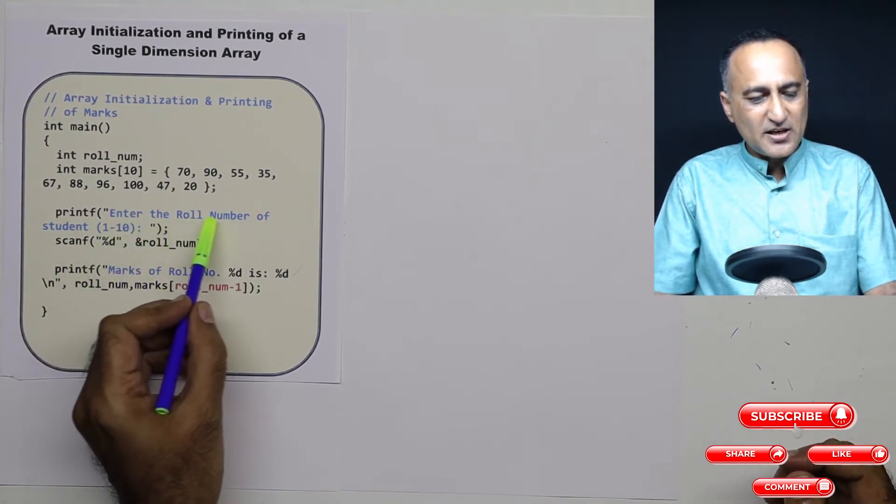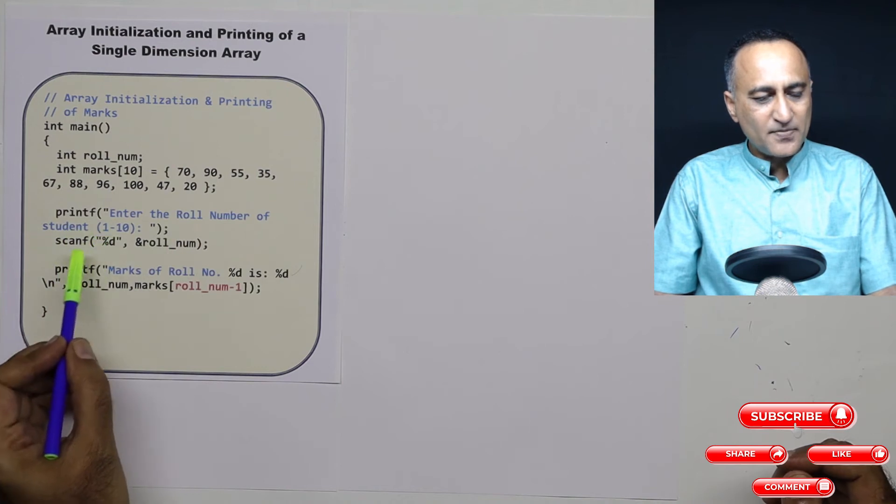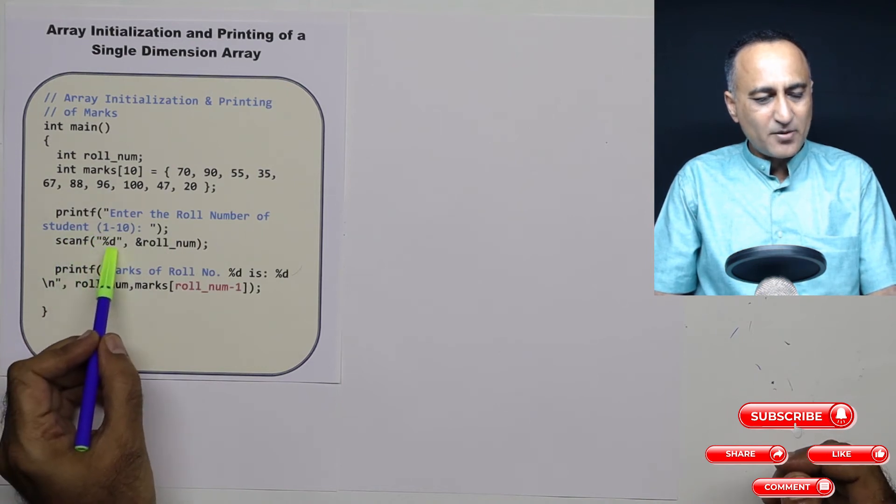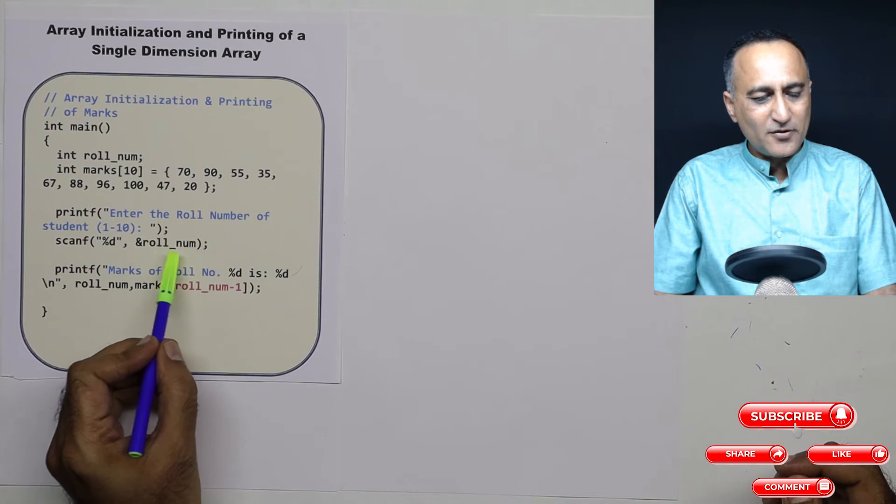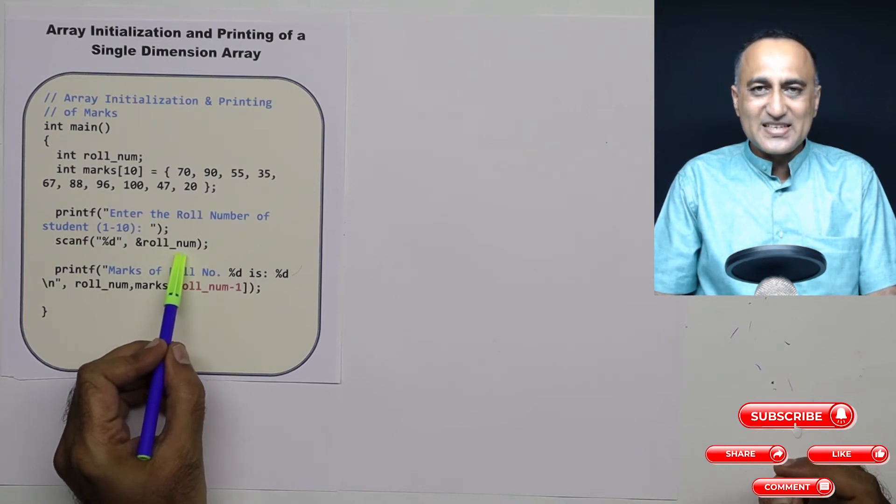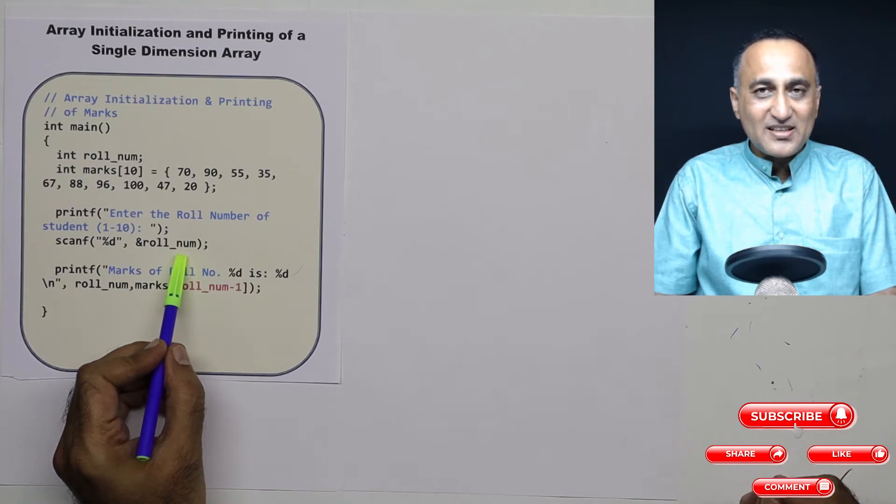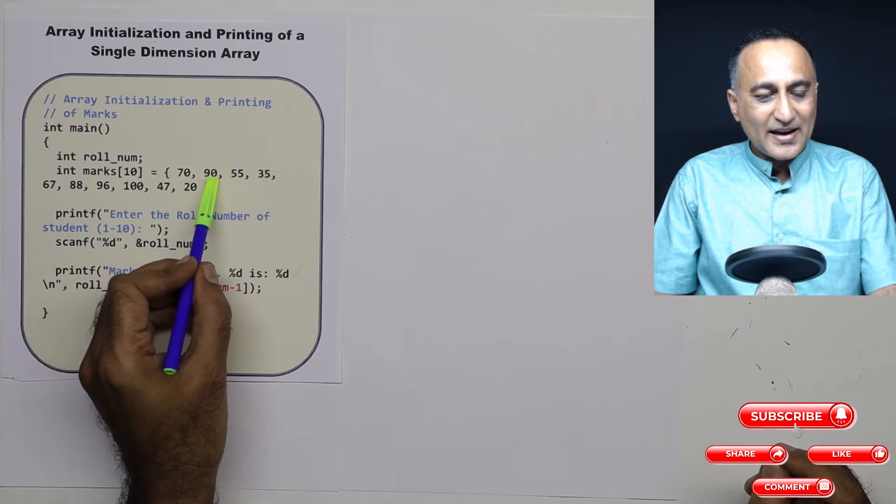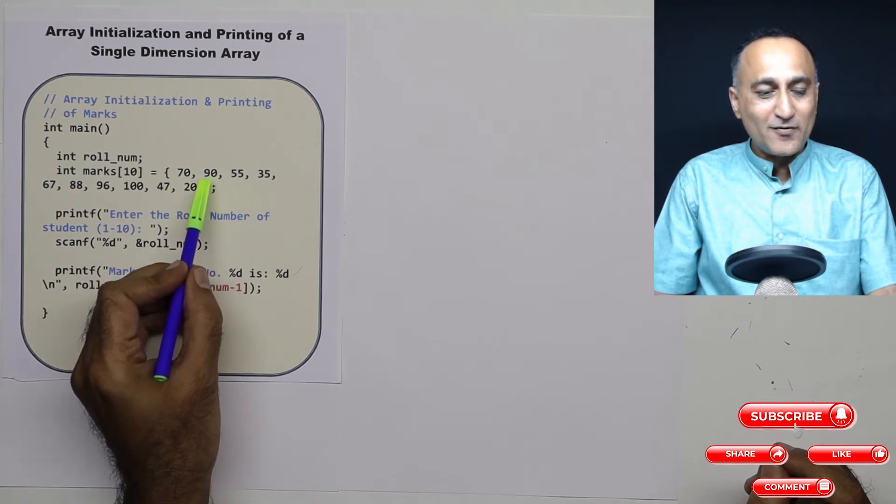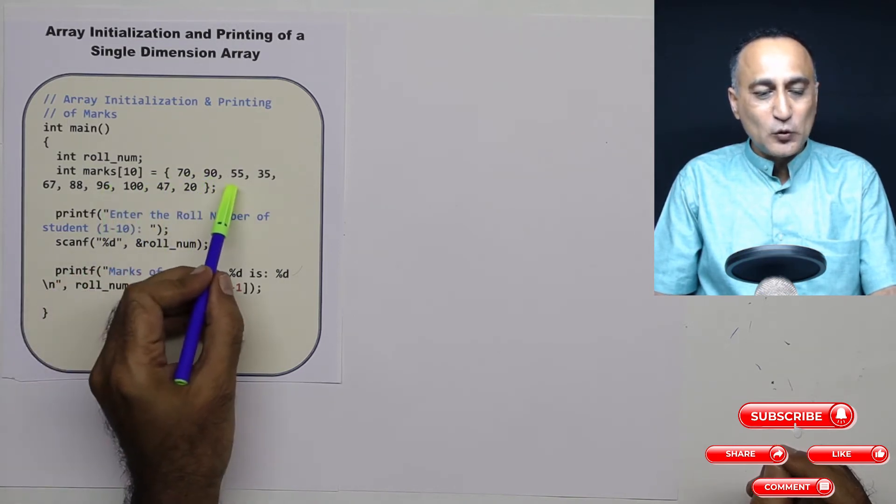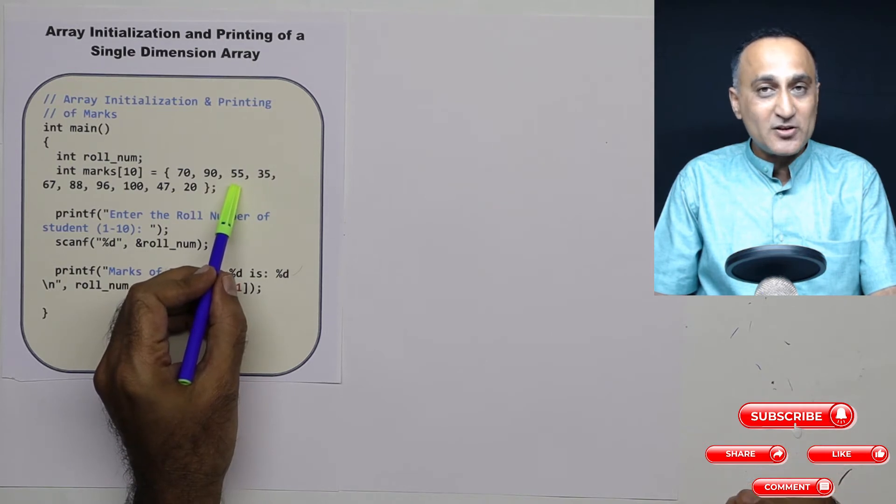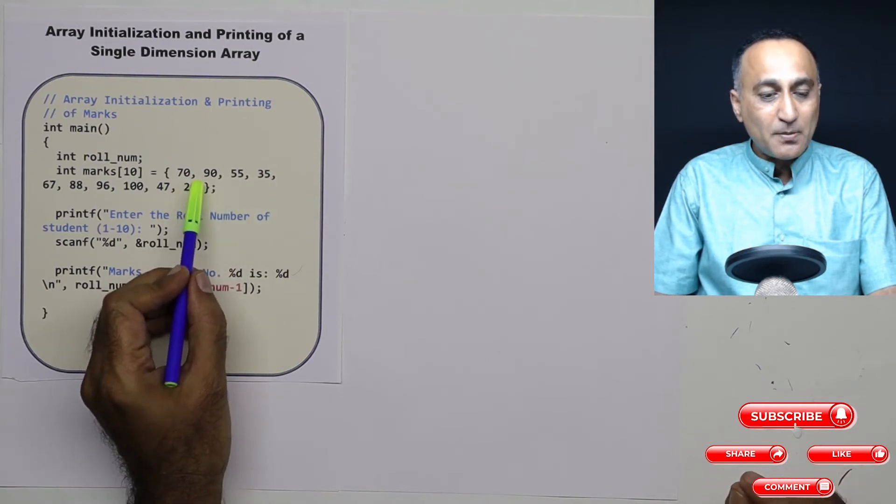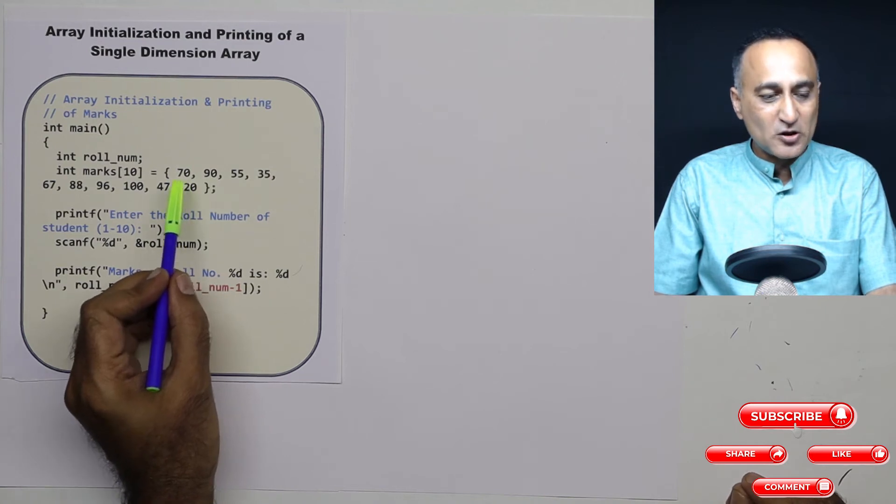So first I am asking the message enter the roll number of the student. Then I am doing scanf %d address of roll_num. Let's say somebody enters the roll number as 2. Although he or she is entering the roll number 2, since I am starting from 0, 90 will be my roll number 2. If I try to print marks of 2, it is going to print 55 which is not correct. I need to print marks of 1 because I am starting from 0.